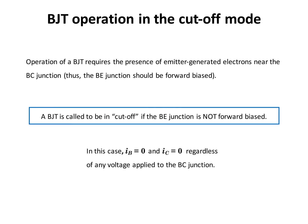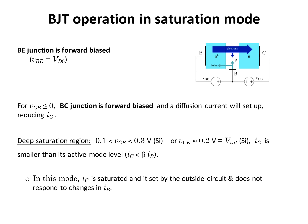The next mode is cutoff. Since BJT operation requires emitter-generated electrons near the base-collector junction, the base-emitter junction must be forward biased. A BJT is in cutoff mode if the base-emitter junction is not forward biased. In that case, I_B equals zero and I_C also equals zero, regardless of any voltage applied to the base-collector junction — the transistor is in the off state.